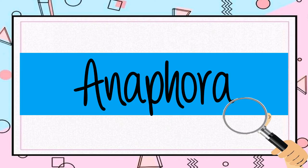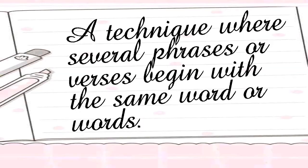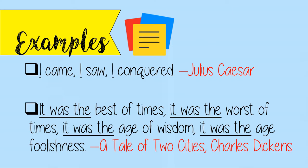Next, anaphora. Anaphora is a technique where several phrases or verses begin with the same word or words. Example is the famous line of Julius Caesar: I came, I saw, I conquered. In this example, 'I' is repeated three times.